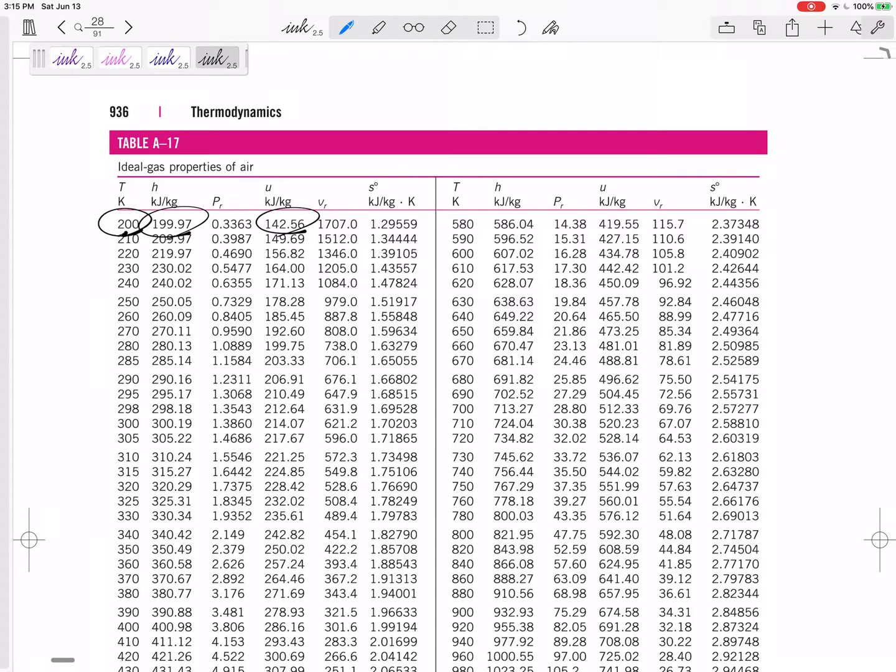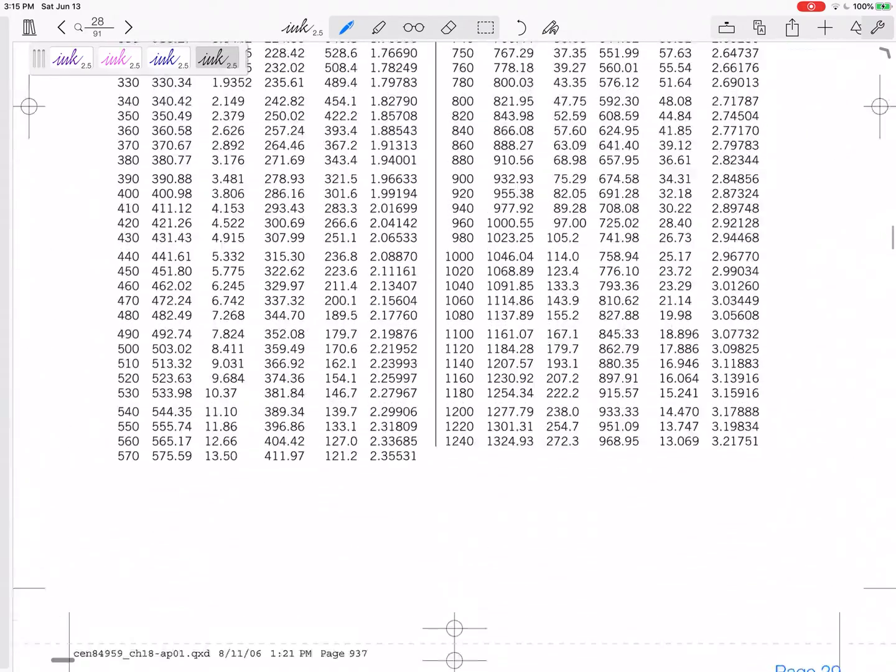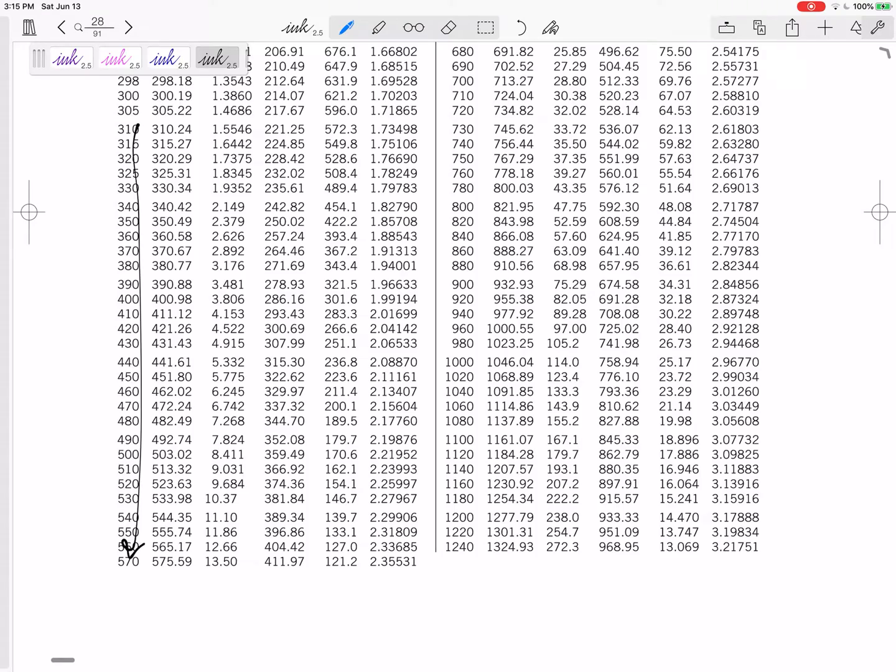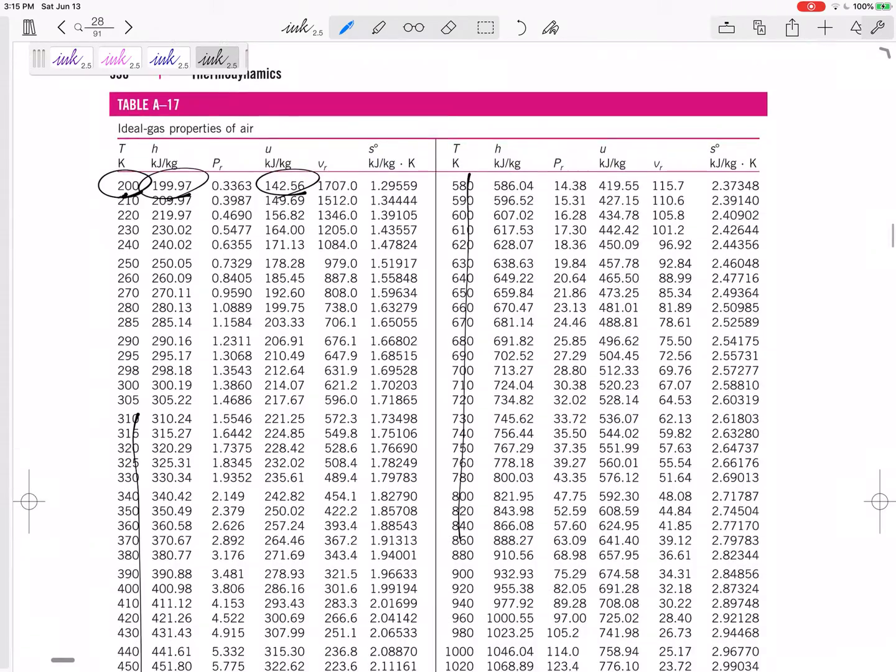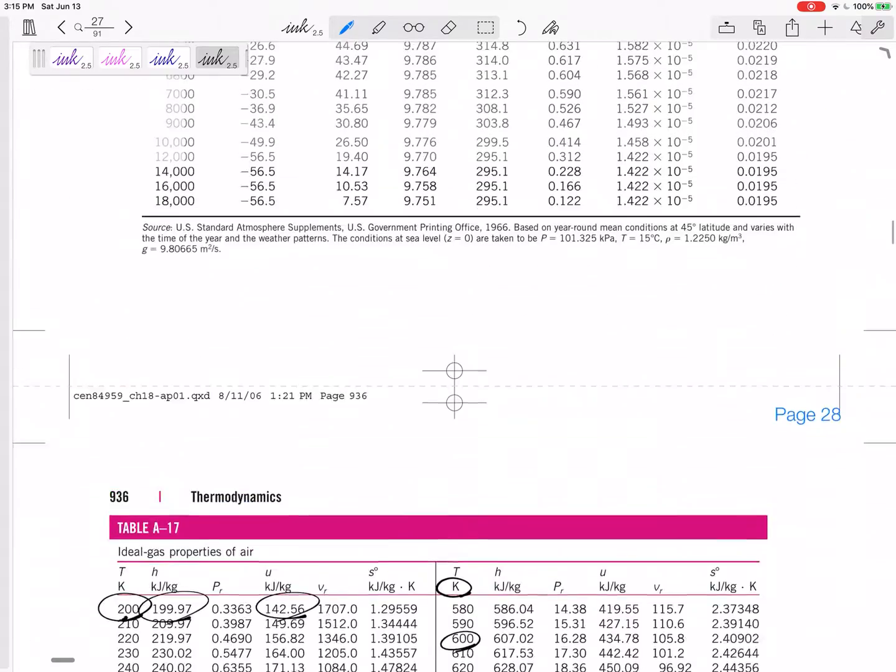At this temperature there's its U value, or there's its H value if that was what we were looking for. We're looking for the U at a temperature of 600 Kelvin. Be careful if you're in Celsius, make sure this one is in Kelvin.